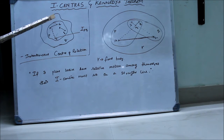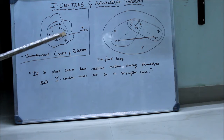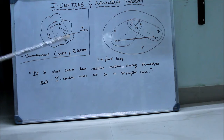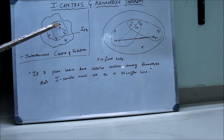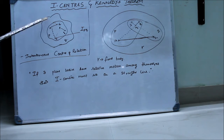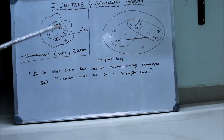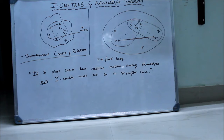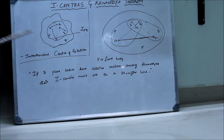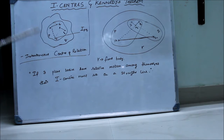Similarly, if we draw a line perpendicular to VA through B, we can assume that the center of rotation of body P lies somewhere on this line. So the point where these two lines meet at that instant of time is the instantaneous center of velocity of that body P with respect to Q.